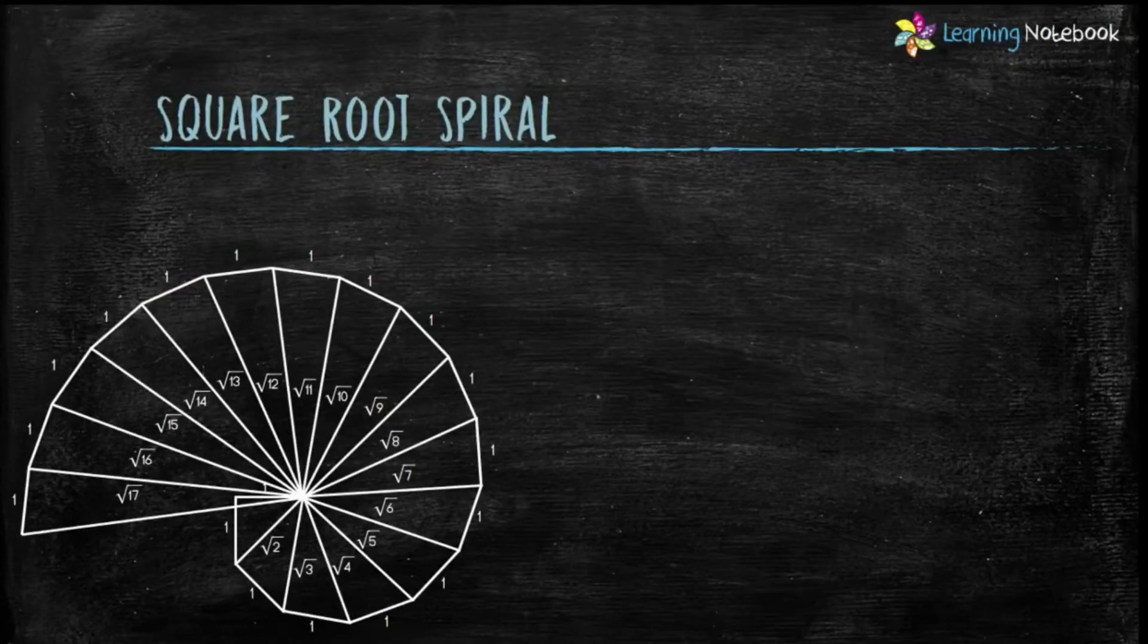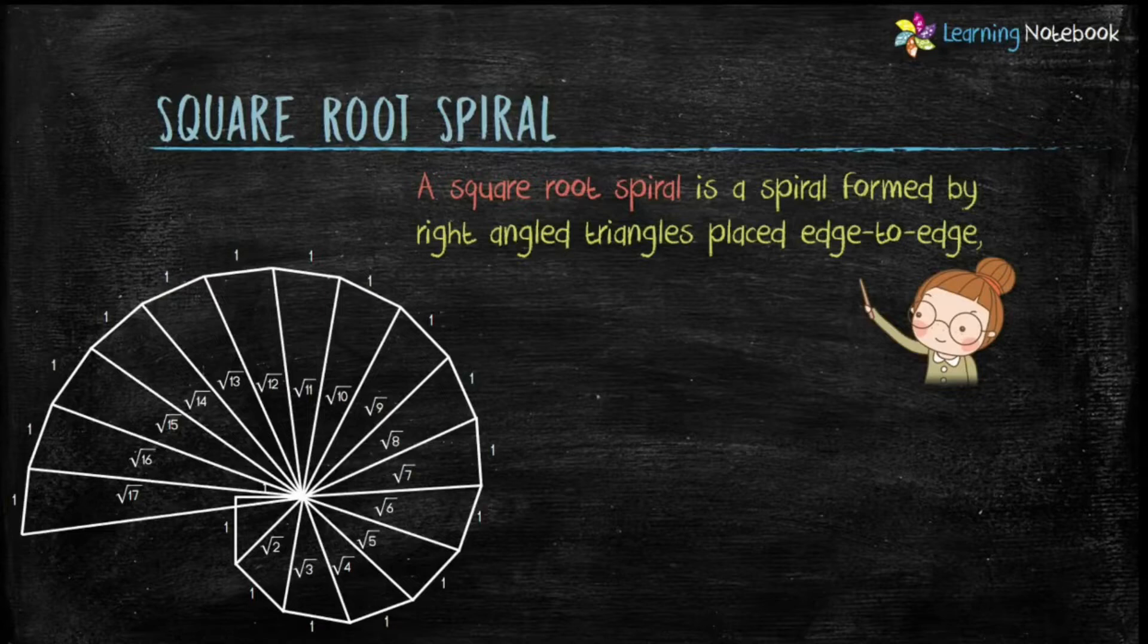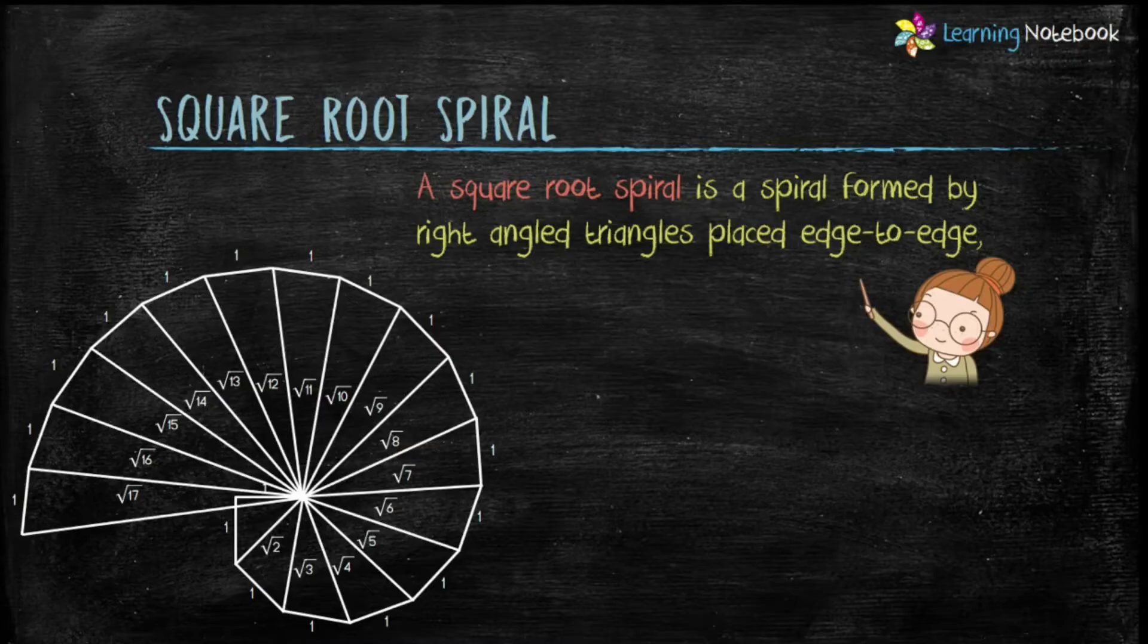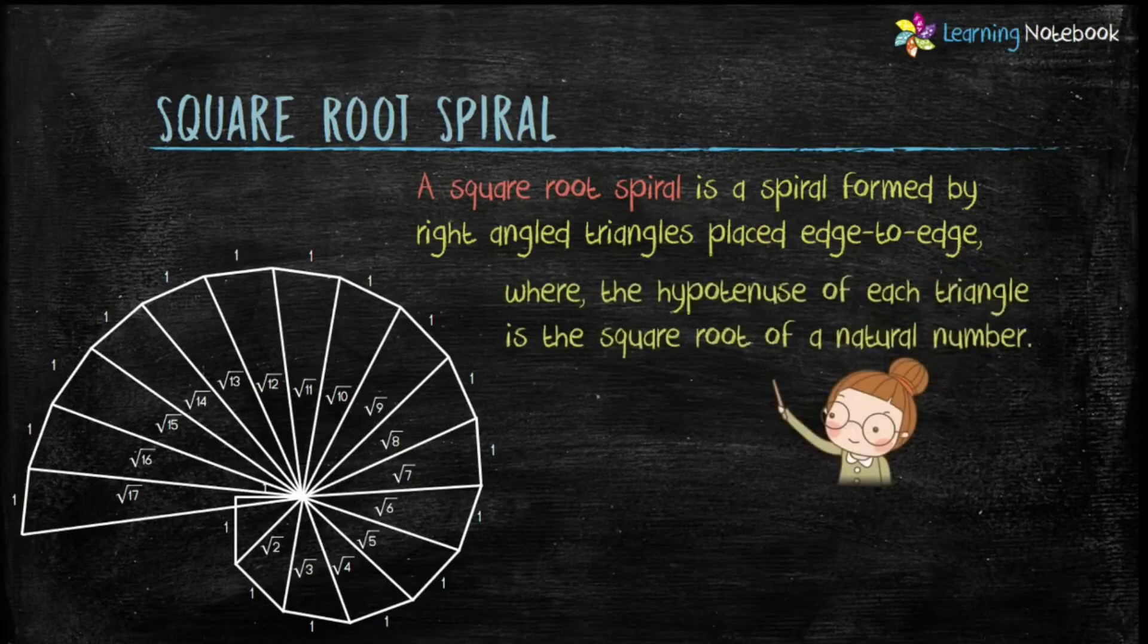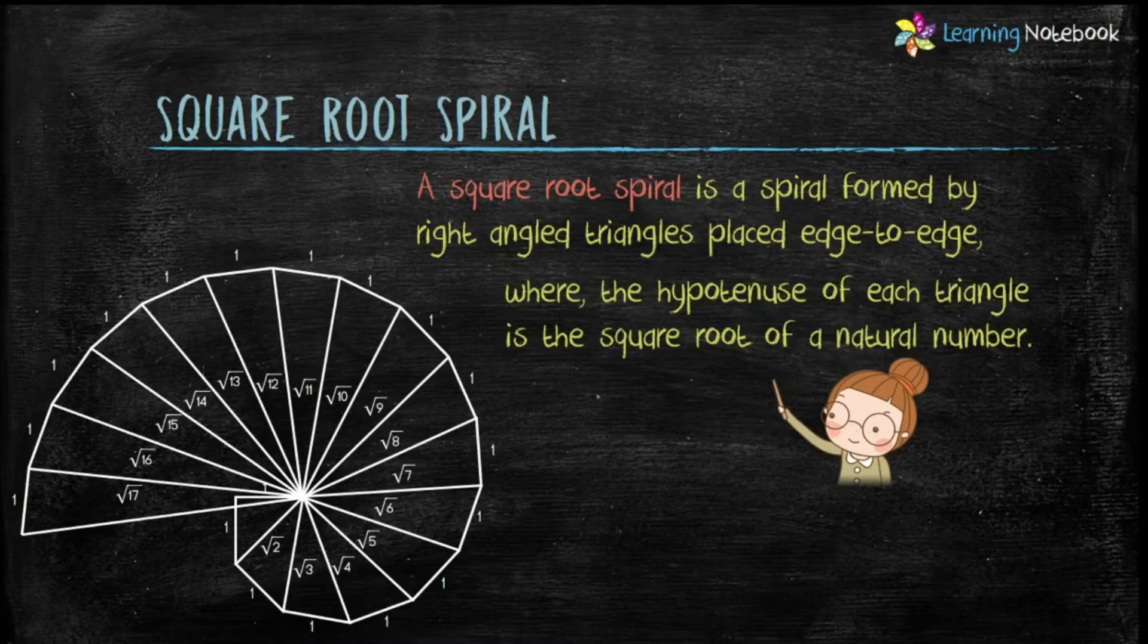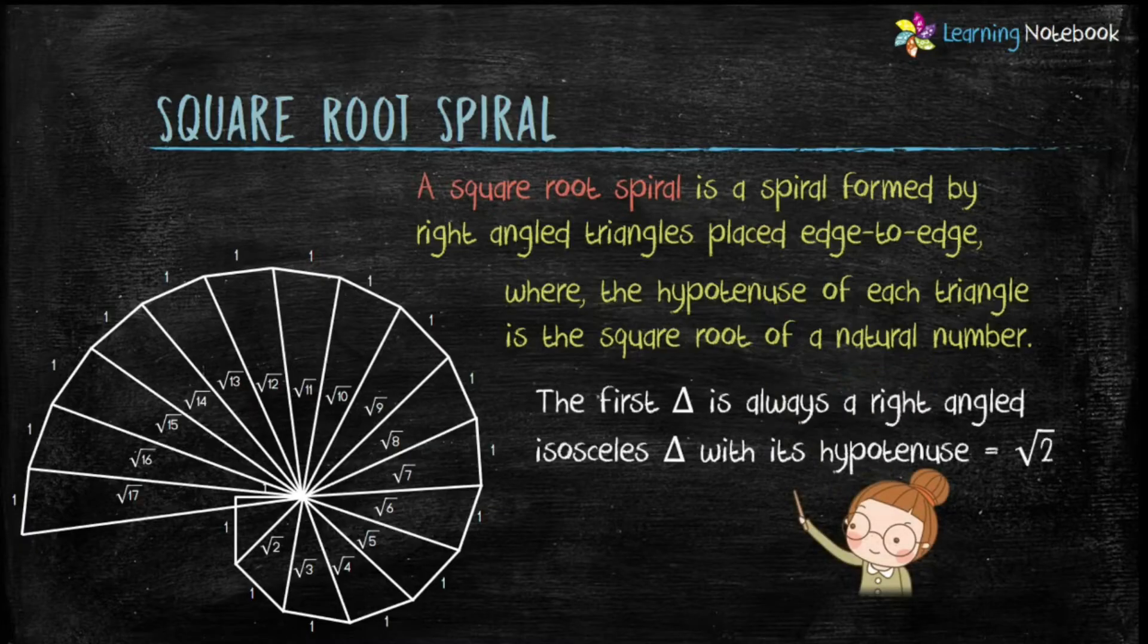Let's understand what a square root spiral is. A square root spiral is a spiral formed by right-angled triangles placed edge to edge, where the hypotenuse of each triangle is the square root of a natural number. The first triangle is always a right-angled isosceles triangle with its hypotenuse equals to root 2.